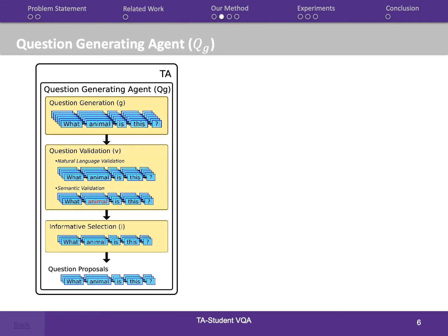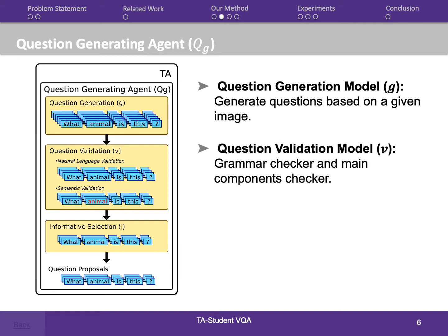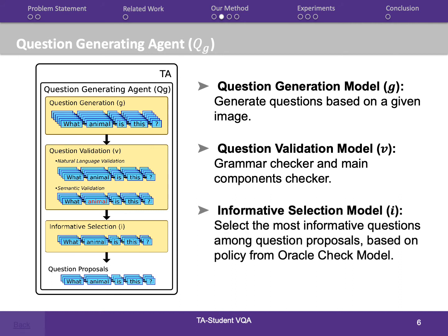The question-generating agent acts as TA, designed to generate a set of questions related to the given image. To obtain these properties, three submodels are built and combined. The first is the question generation model, responsible for proposing questions based on the given image. The second is the question validation model, which checks if the generated questions are grammatically correct and relevant to the content. The third is the informative selection model, which selects the most informative questions from the proposals to improve training efficiency.